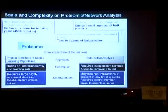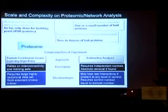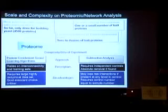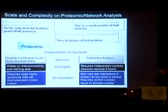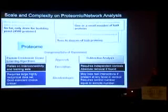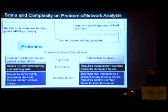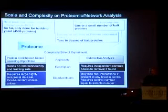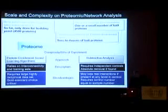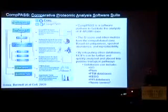On the other extreme — when analyzing only one or two baits — people most frequently use subtractive analysis. This requires independent controls for each component. If you identify a protein in your control, you have an absolute removal if it's found in your actual test case. This is a huge advantage when looking for proteins that appear at some frequency in control IPs.